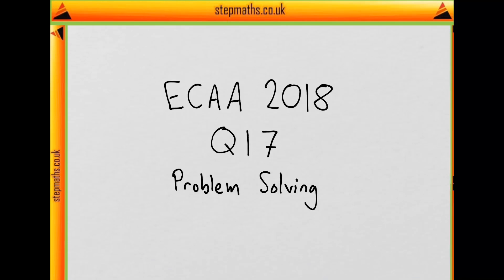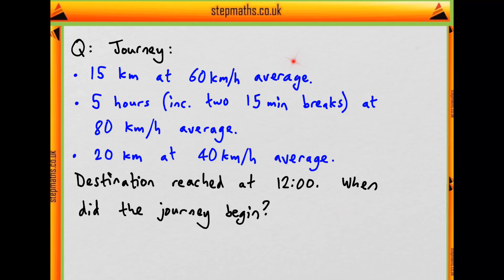This is question 17 on problem solving from the 2018 ECCA. We're told that a car journey consists of these three stages. Firstly we have a 15km section where we go at 60km per hour average.